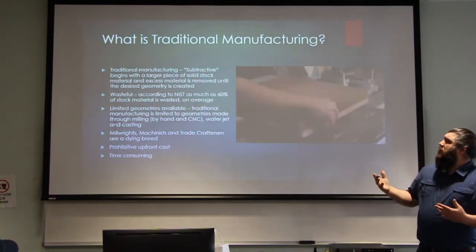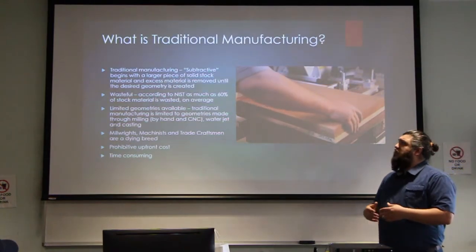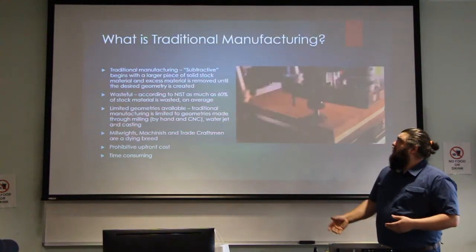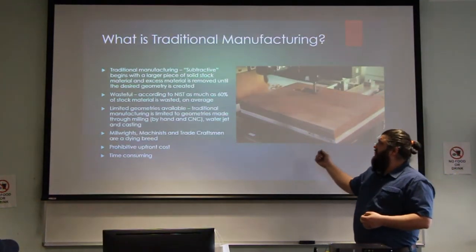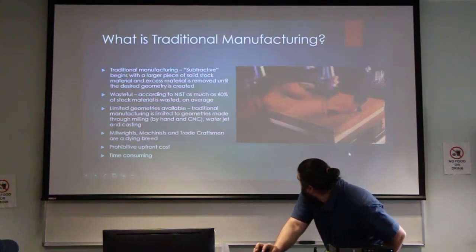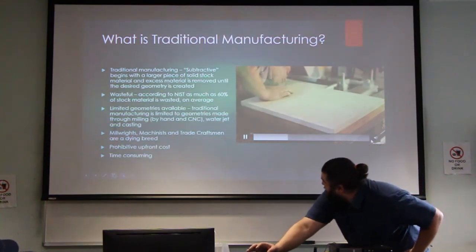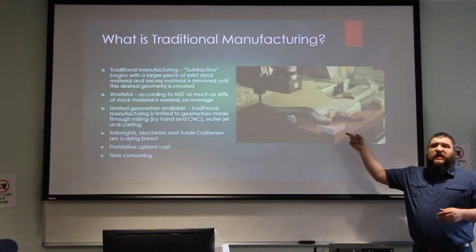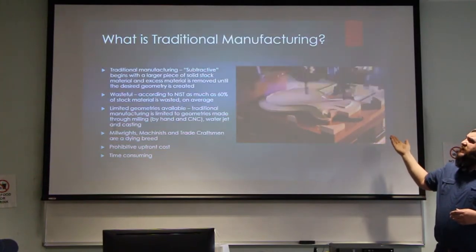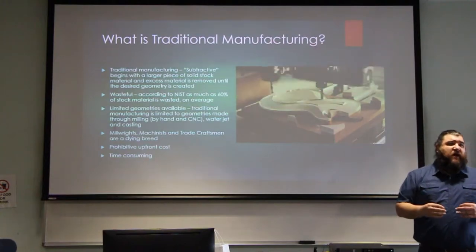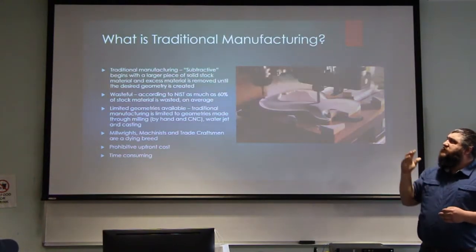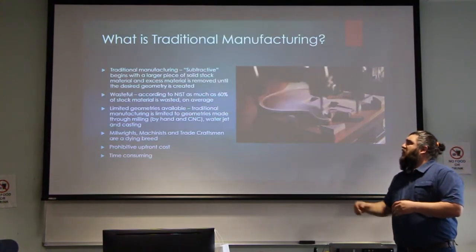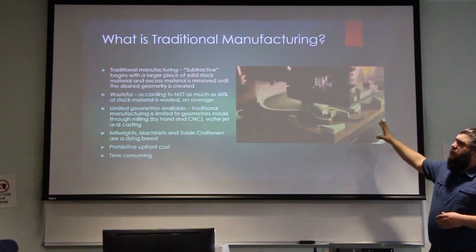What is traditional manufacturing? Traditional manufacturing starts with a large piece of stock and goes down to the geometry it needs — we call this subtractive manufacturing. The problem with traditional manufacturing is that it's wasteful. According to studies done at NIST, subtractive manufacturing — you can see here they started with a solid block and ended up with just a guitar shape — wastes about 60% of your material if you get it correct the first time. If the table gets bumped, if you lose a drill bit, if part of the wood cracks, the whole thing is wasted.